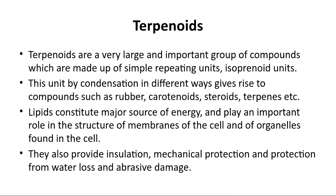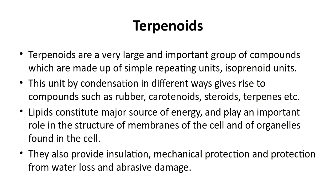Terpenoids are the first sub-part we are going to study. Terpenoids are a very large and important group of compounds made up of simple isopenoid units. This unit via bio-condensation in different ways gives rise to compounds such as rubber, carotenoids, steroids, terpenes, etc.